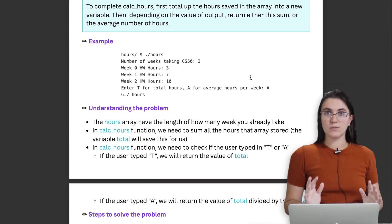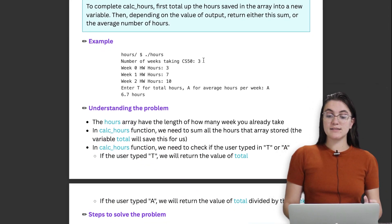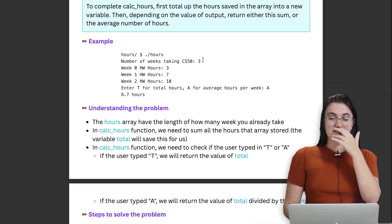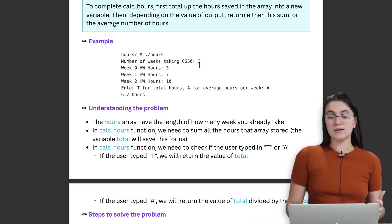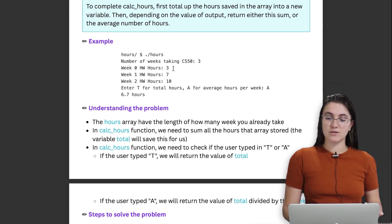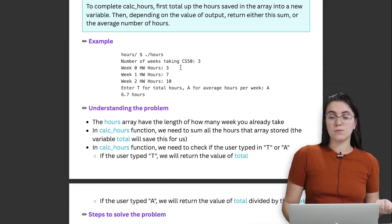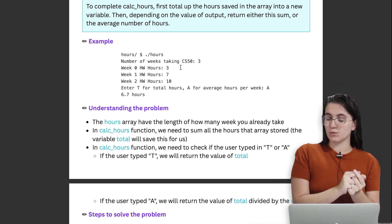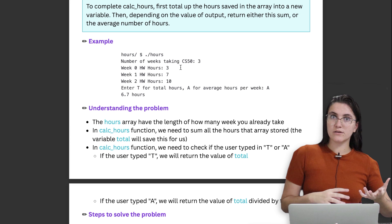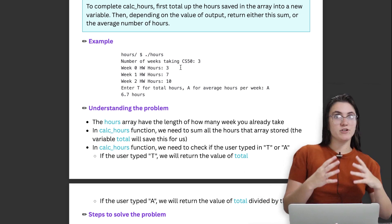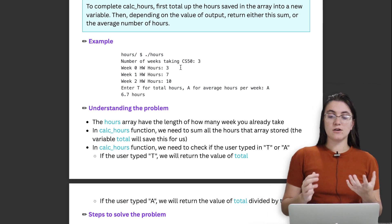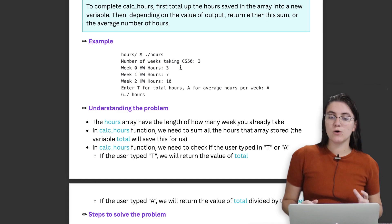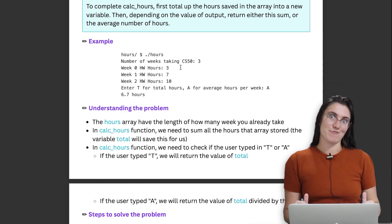We already have some code. The program will ask us how many weeks we took — the user typed three. Then it keeps asking how much time you spent in each week. For example, week zero: three hours, week one: seven hours, week two: ten hours. We store these hours in an array for each week. Our goal is to return either the total hours or the average hours per week depending on whether the user types T or A. Our goal is creating the function that calculates the total or the average.